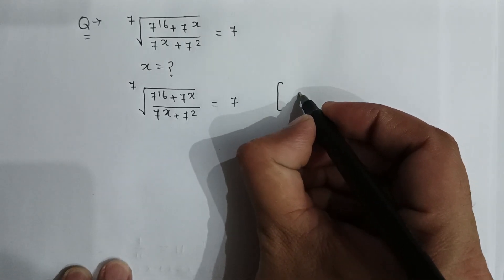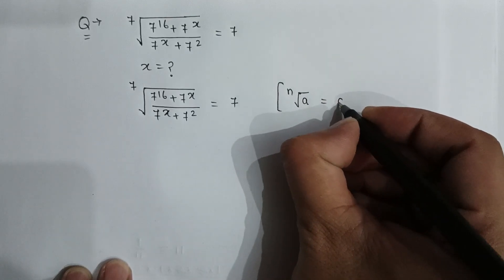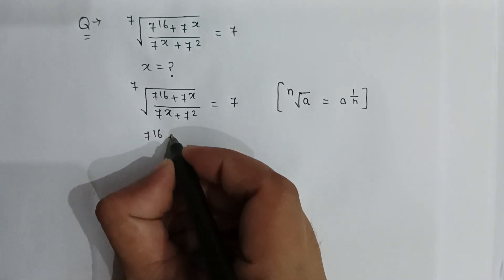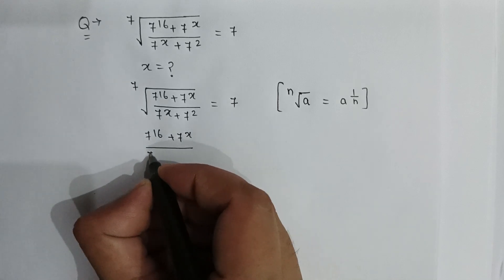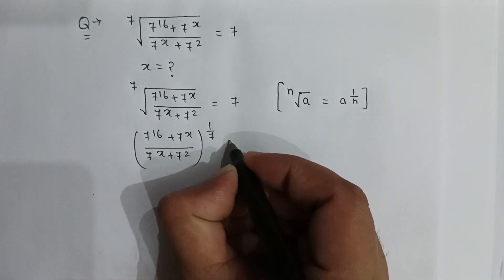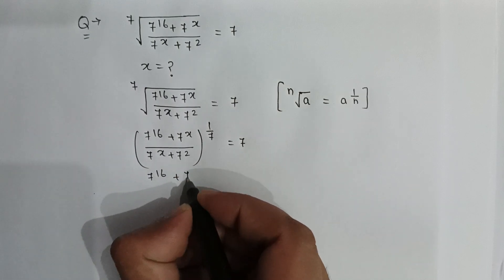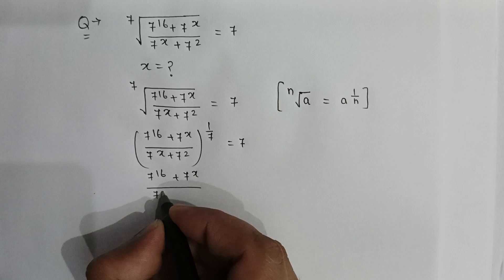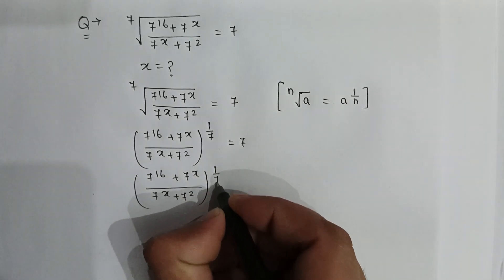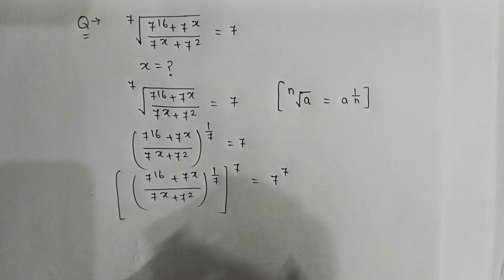As we know, the nth root of a can be written as a to the power of 1 over n. So here it becomes: (7 to the power 16 plus 7 to the power x, all over 7 to the power x plus 7 to the power 2), to the whole power 1 over 7, is equal to 7. Raising both sides to the power 7 gives the whole power 1 over 7, then to the power 7, equal to 7 to the power 7.